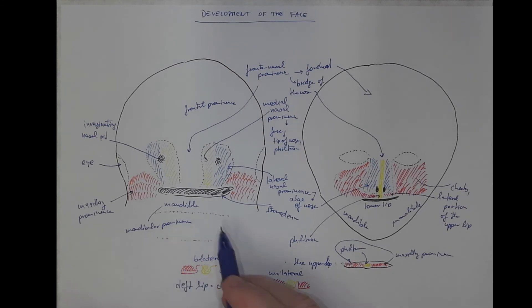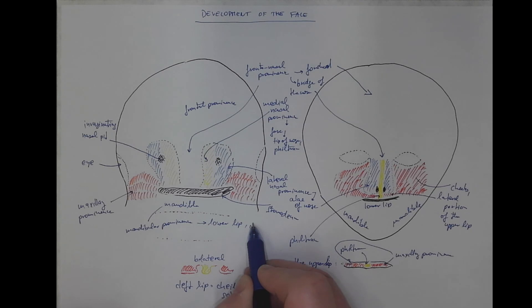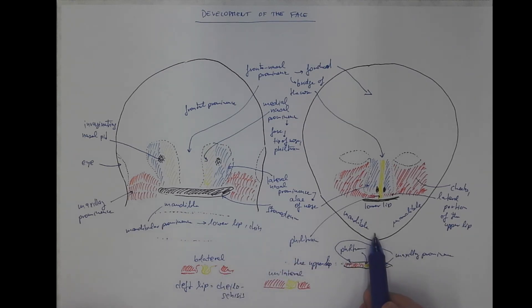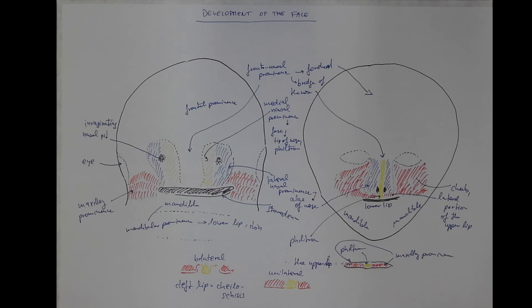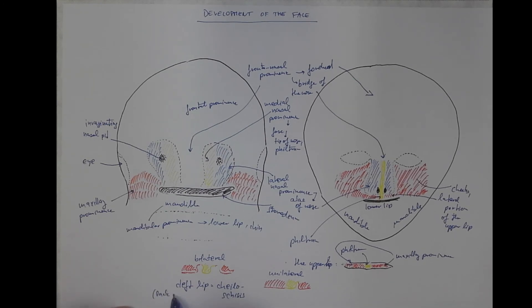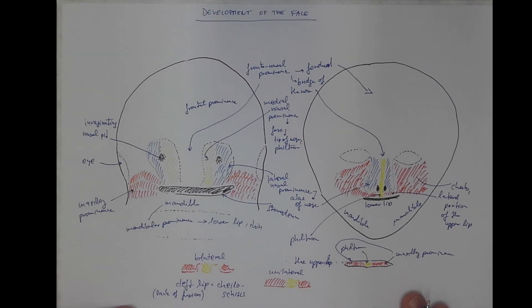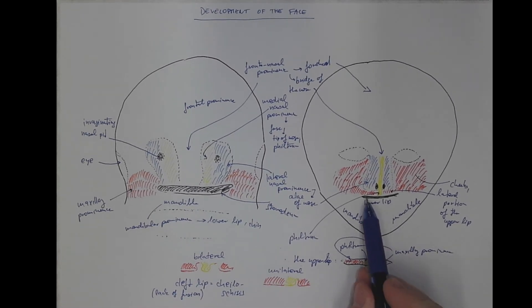So the mandibular prominence becomes the mandible and the lower lip, and also the chin in the midline, the fusion of the right and left mandible. So although it's called cleft lip, it's actually lack of fusion, lack of fusion between these components that need to fuse to produce a complete upper lip.